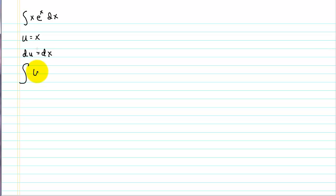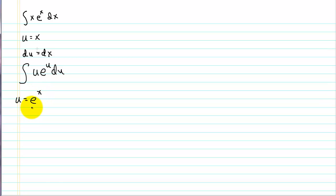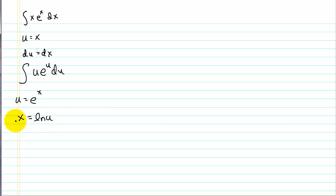So x becomes u, e to the u, du — we end up with the same problem. If we tried picking u to be e to the x, then u prime would also be e to the x, so that doesn't work. And if we tried formal substitution, we'd have to solve for x, getting x equals ln(u), and if we proceed again we're going to have an issue. So integration by substitution does not work.